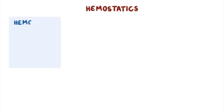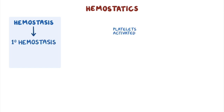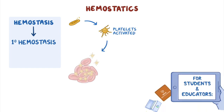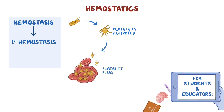Hemostatics are medications used to induce hemostasis, which is a physiological process that results in clot formation to prevent or stop a hemorrhage. Primary hemostasis first starts when platelets are activated and aggregate to form a platelet plug at the site of an injured blood vessel.